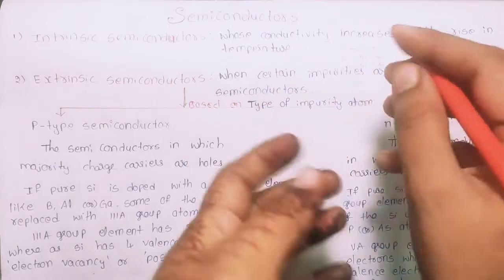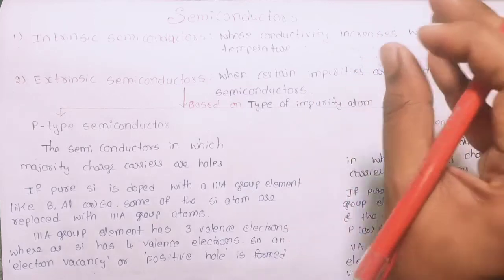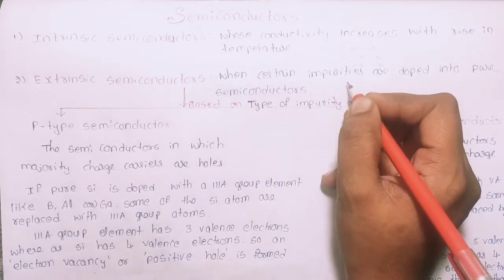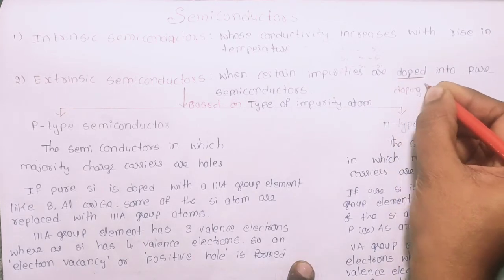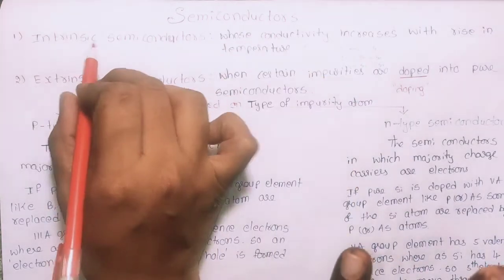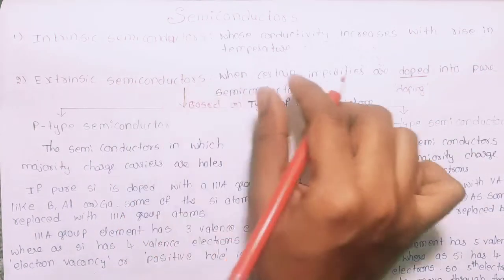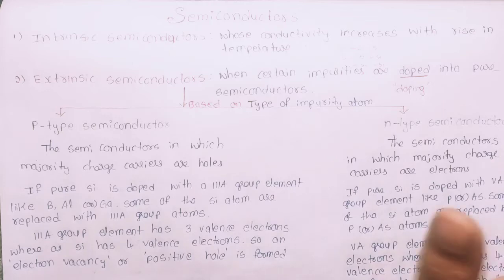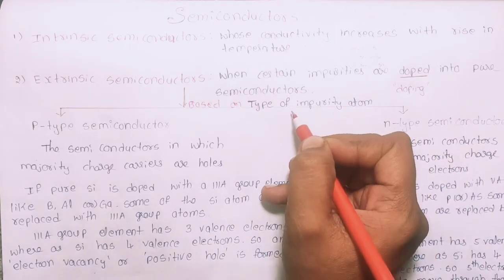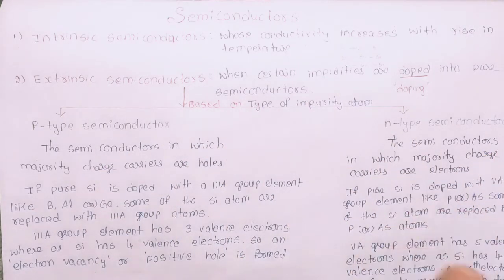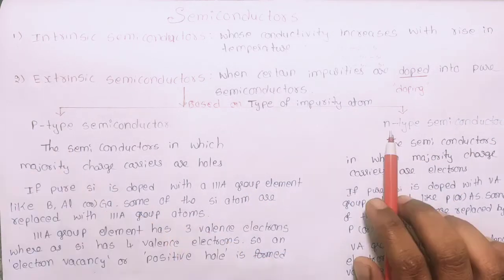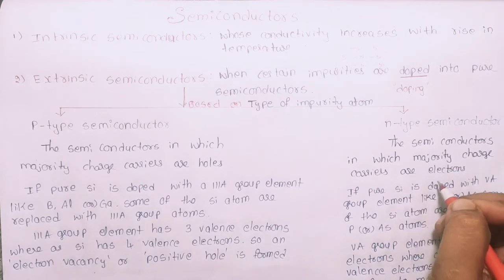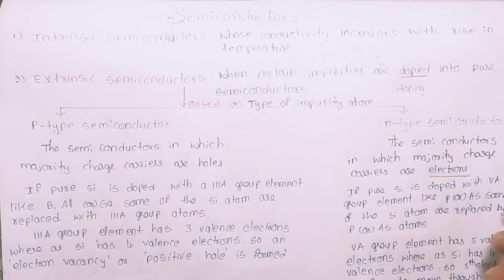In extrinsic semiconductors, we add impurity to pure semiconductors. There are two types: N-type and P-type. Extrinsic semiconductors are formed by adding specific impurities to the pure semiconductor.